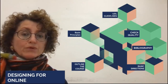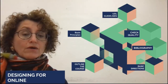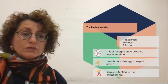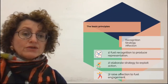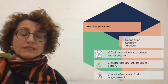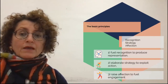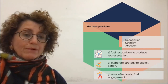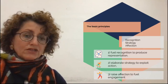The basic principles of collaborative learning are built upon the knowledge that our learning brains are composed of three different networks devoted to recognition, strategy and affection. These three networks are aligned with the three main principles: recognition to produce representation, strategy to exploit action, and affection to fuel engagement.